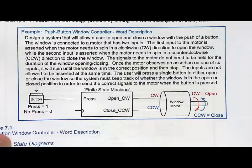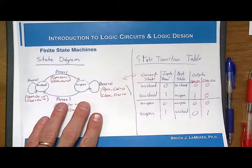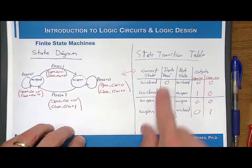We came up with the state diagram, which was a design step that came up with states and transitions to implement the functionality of the word description. And then ultimately we came up with the state transition table, which was just a tabular form of what the state diagram was. Now we're ready to synthesize the finite state machine.